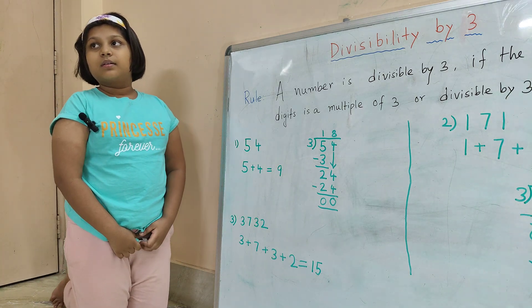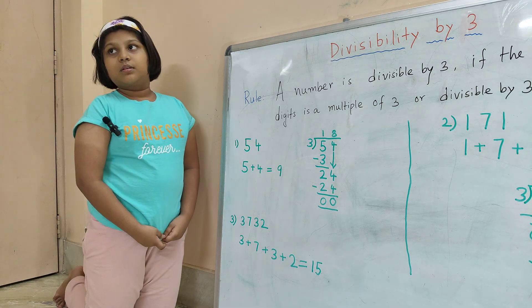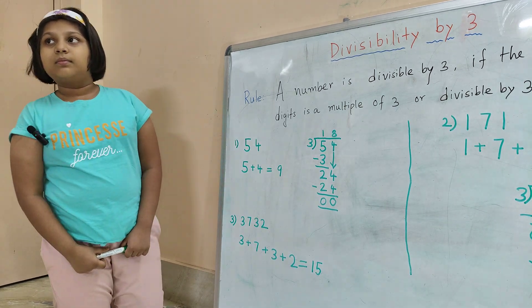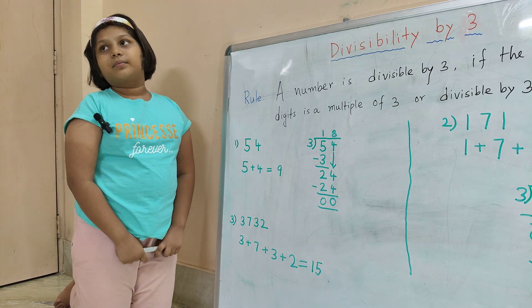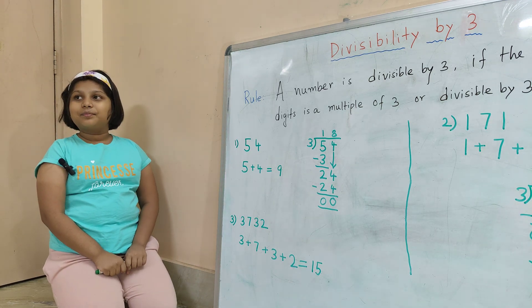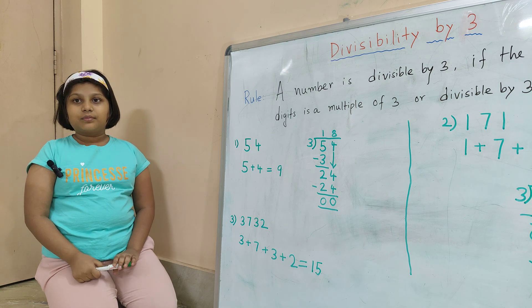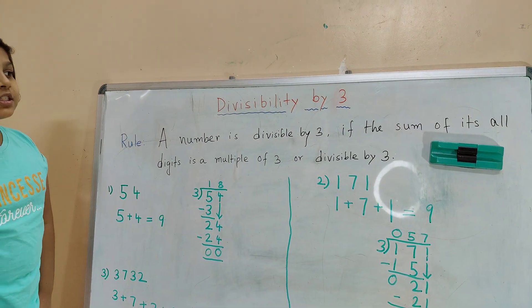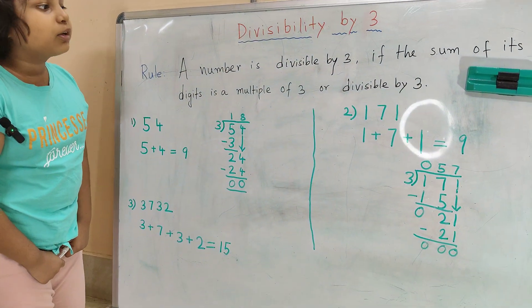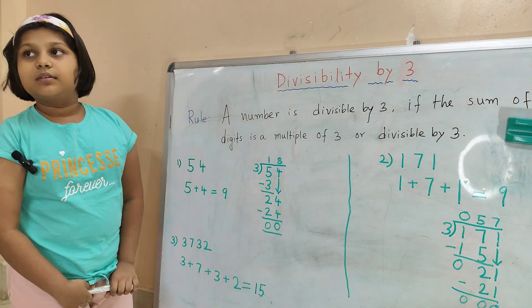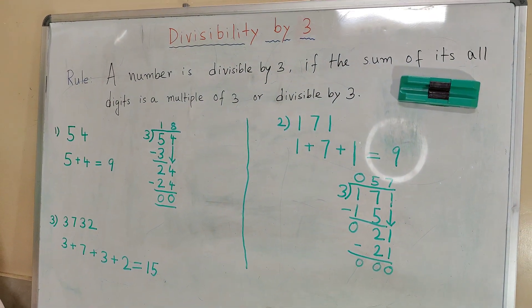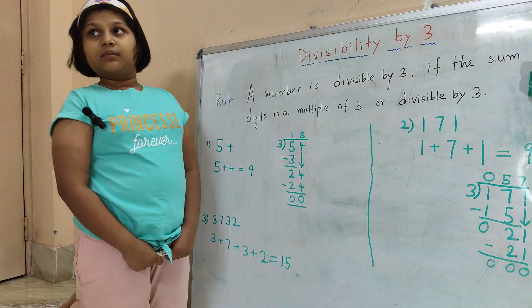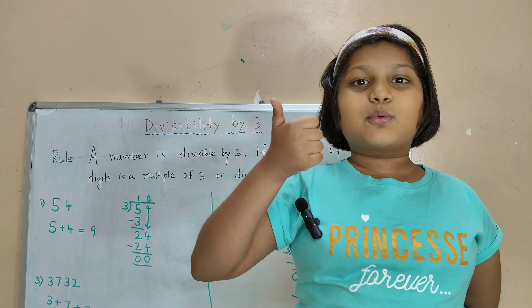In this way, we can check bigger numbers — 4-digit, 5-digit, 6-digit, 7-digit numbers — and see whether they are divisible by 3 or not. Did you find it interesting? Yes, mamma. Let's remember the rule: a number is divisible by 3 if the sum of its all digits is a multiple of 3 or divisible by 3. Remember this rule and try to solve the questions. Next, we will do divisibility by 4. Thanks for watching the video.